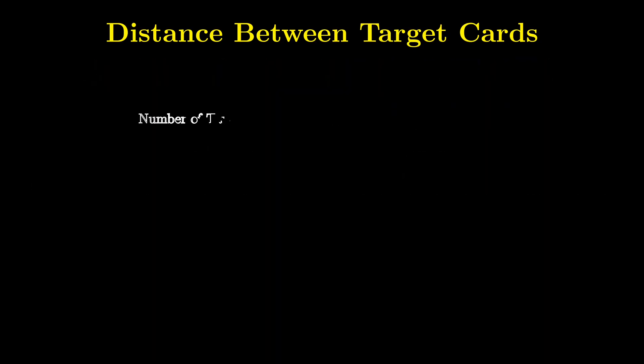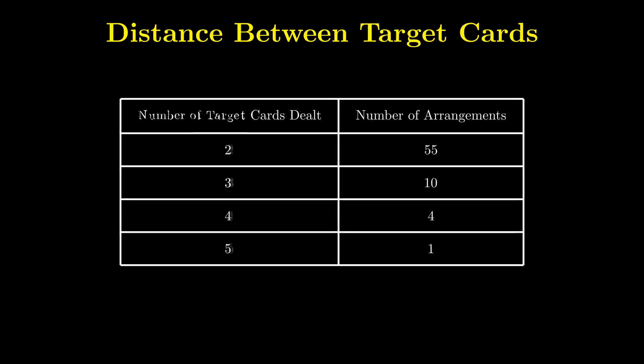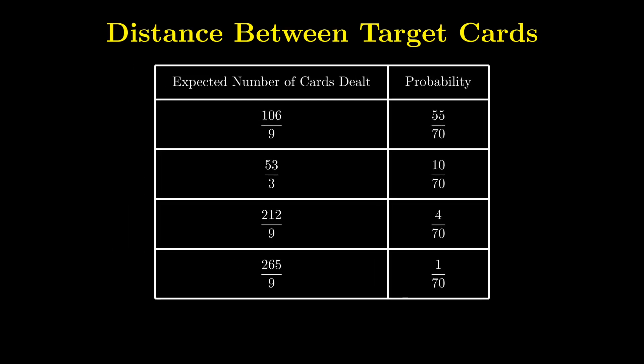Now back to the table. We can multiply the left column by 53 over 9 to get the expected number of cards dealt. On the right-hand side, we divide by 70 to get the probability of each scenario.